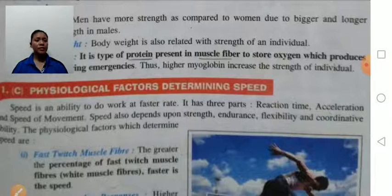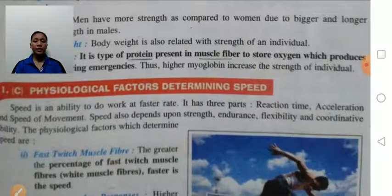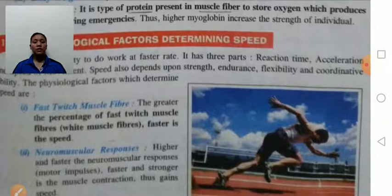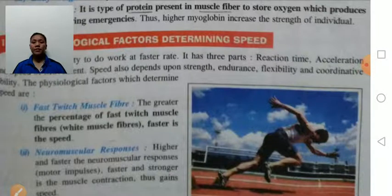Speed also depends upon strength, endurance, flexibility, and coordinative ability. Usually a person who has more strength, endurance, flexibility, and coordinative ability will have more speed. Fast twitch muscle fibers — white muscle fibers — help in fast contraction of muscles. Persons who have a greater percentage of fast twitch muscle fibers will have more speed, as they help in fast contraction of the muscles.